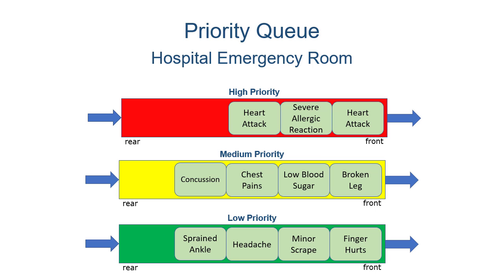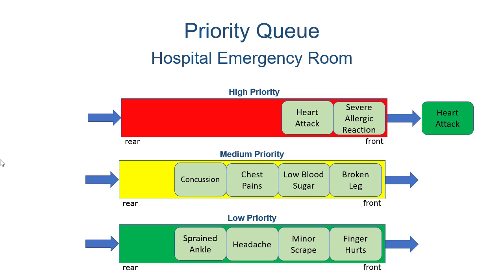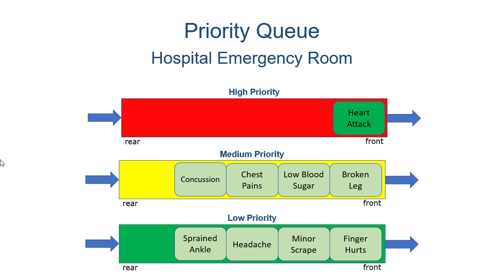If this was the current state of the queue, the first heart attack would be handled, then the severe allergic reaction, and then the next heart attack. Those are three potentially life-threatening situations, so those would get the highest priority. Now in this case we're doing things one by one. Obviously in an actual ER scenario there would be multiple pathways for treatment, but we're keeping this example simple, assuming everything is getting handled one at a time.